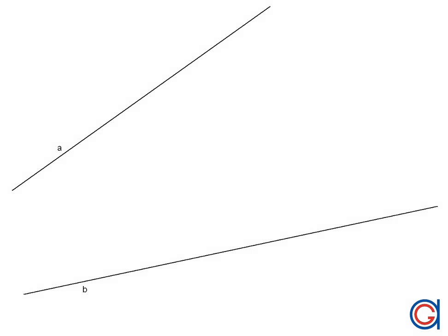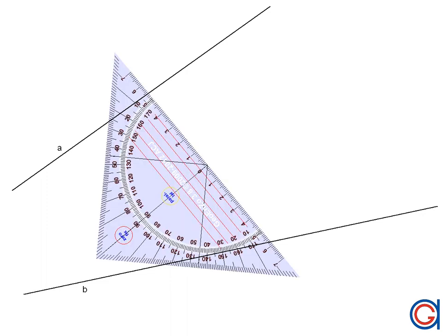Hello. In today's video we are going to learn how to draw the angular bisector of an angle when its vertex is outside the limits of the drawing, in this case the angle of two convergent lines A and B.